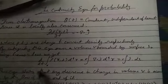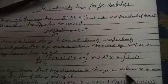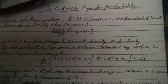This equation states that any decrease in charge in volume V is accounted by the flow of charge out of it.